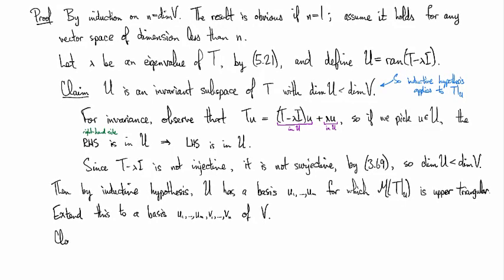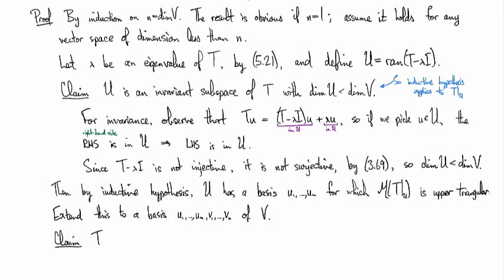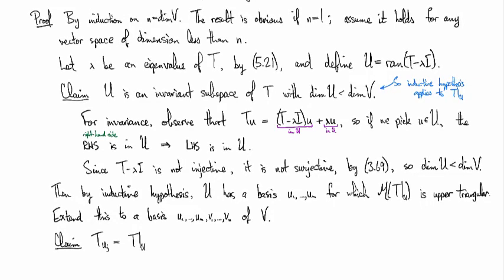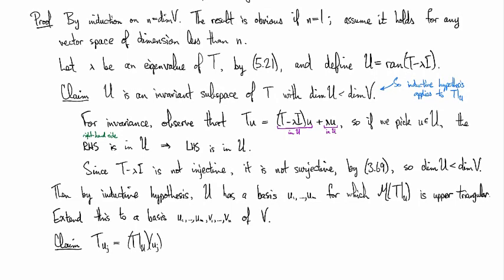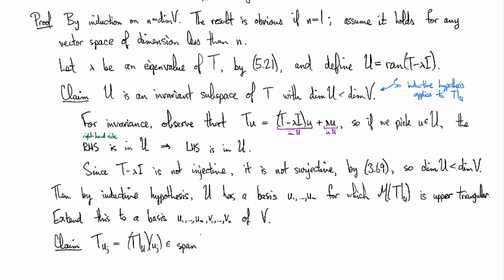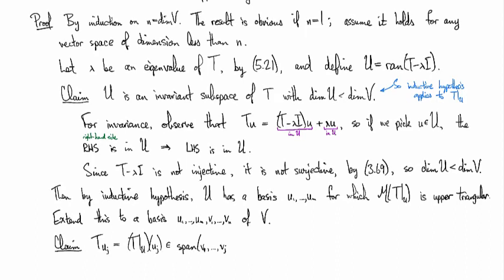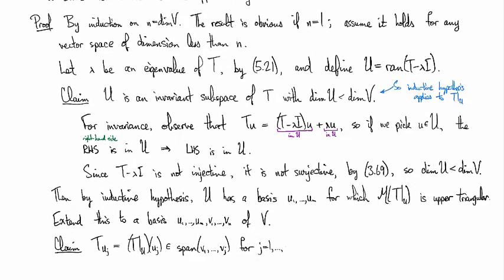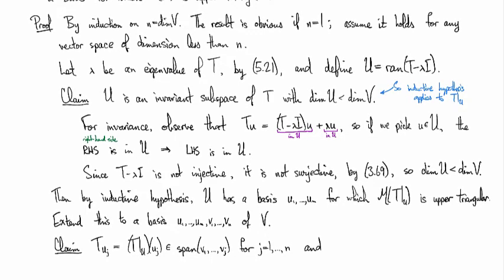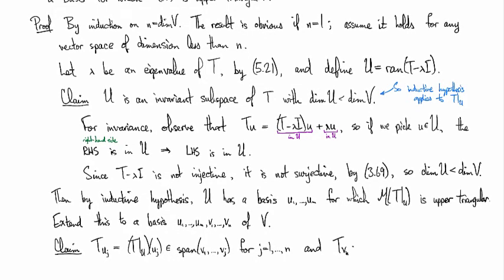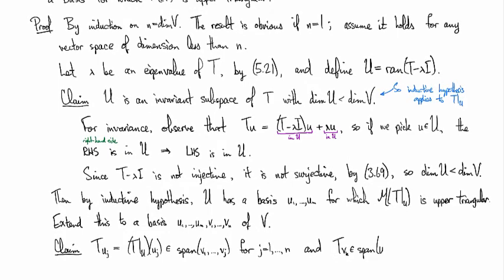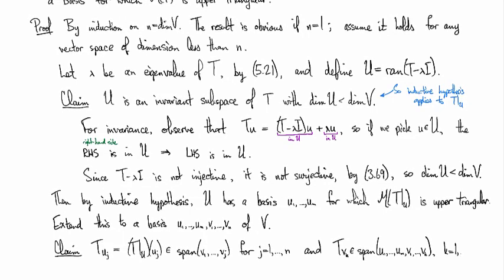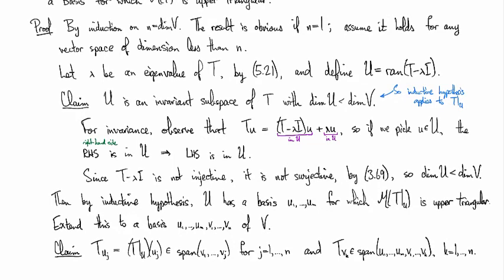All right. Okay, and then we have a new claim. Claim number two. If we apply T to uj, so this is T restricted to U applied to uj if you want to think about it that way, then this is in the span of v1 up through vj. And if I apply T to the other basis element, Tvk, then these are in the span of u1 up through um, and then v1 up through vk.